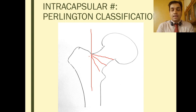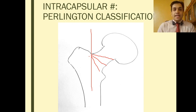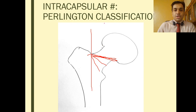What actually matters is not whether it is a Pauwels A or C, or a Perlington A or C. The concept to grasp is that a fracture line which is more horizontal is less likely to re-displace when the patient bears weight vertically downwards.